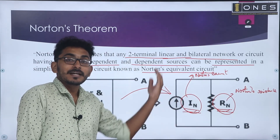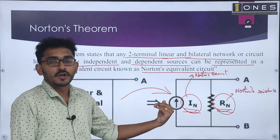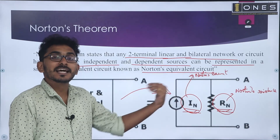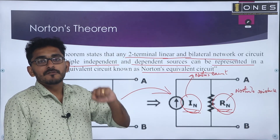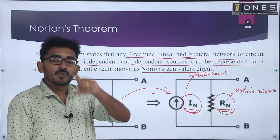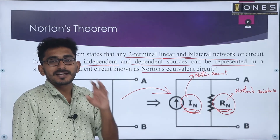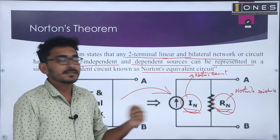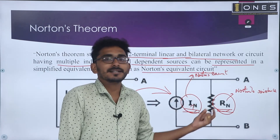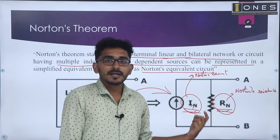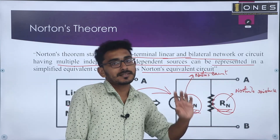It is similar to that of a Thevenin's circuit and Thevenin's theorem also. In Thevenin's theorem, we represent a voltage source in series with an equivalent resistance called the Thevenin resistance. Whereas in Norton's theorem, we represent a current — that is, Norton's current — in parallel with a resistance called the Norton's resistance.